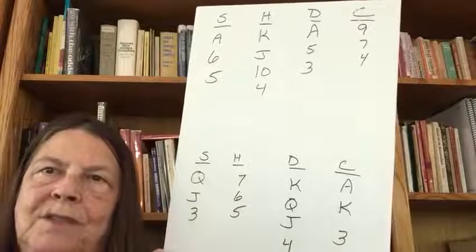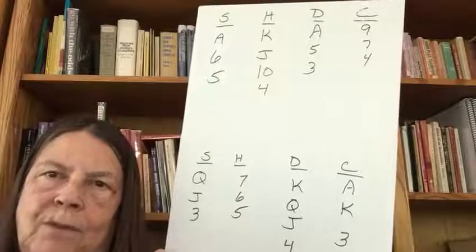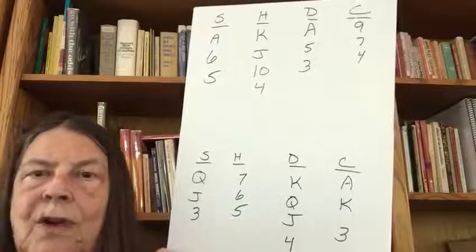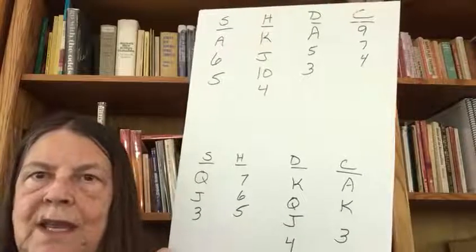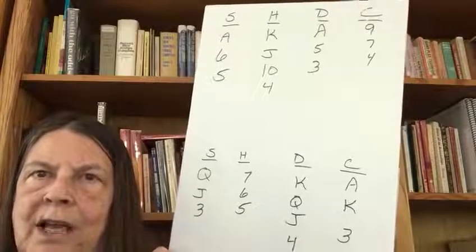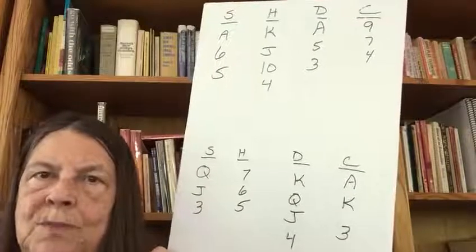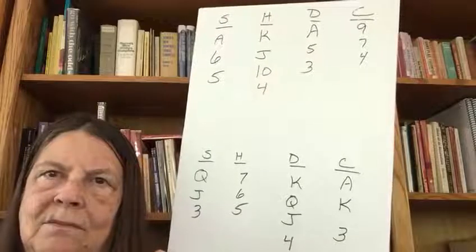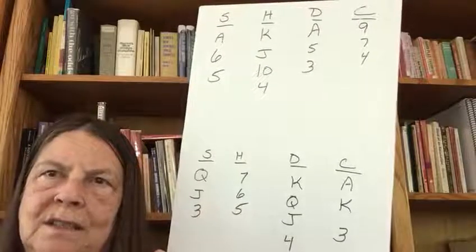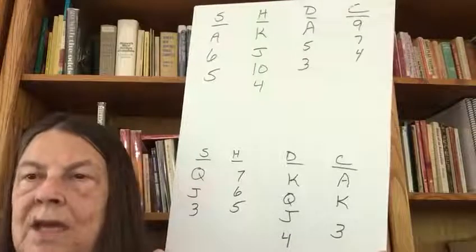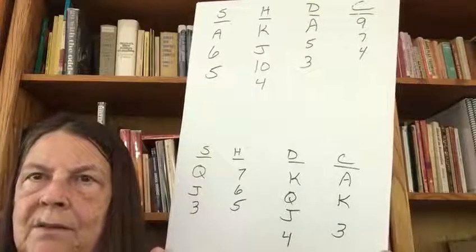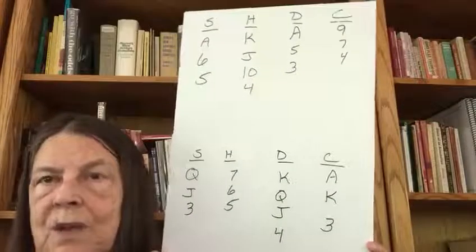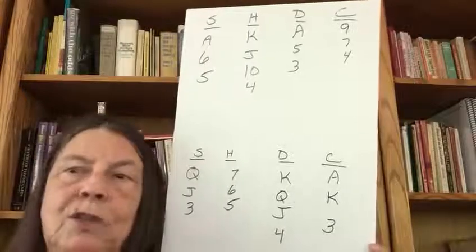If you count your tricks, you have one spade trick for sure, no heart tricks yet, four diamond tricks because between your two hands you have the ace, king, queen, jack, and four, and two club tricks with the ace and king. That's seven tricks total - four diamonds, two clubs, and a spade. We know we can create another spade trick by finessing for the king of spades or just by losing the king, but we need two more tricks.